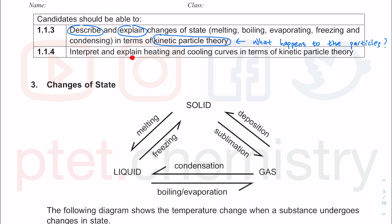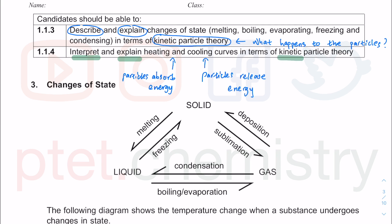You also need to interpret and explain in terms of heating as well as cooling. When heating, you need to absorb energy — the particles absorb energy. When cooling, the particles will release energy. In lower secondary science you talk about energy changes, but this is upper secondary chemistry, so we talk about kinetic particle theory. What happens at the particulate level? You don't just talk about what you see outside, but what is happening to the particles — the thing you cannot see with your eyes. Certain properties are a result of what happens at the particulate level.